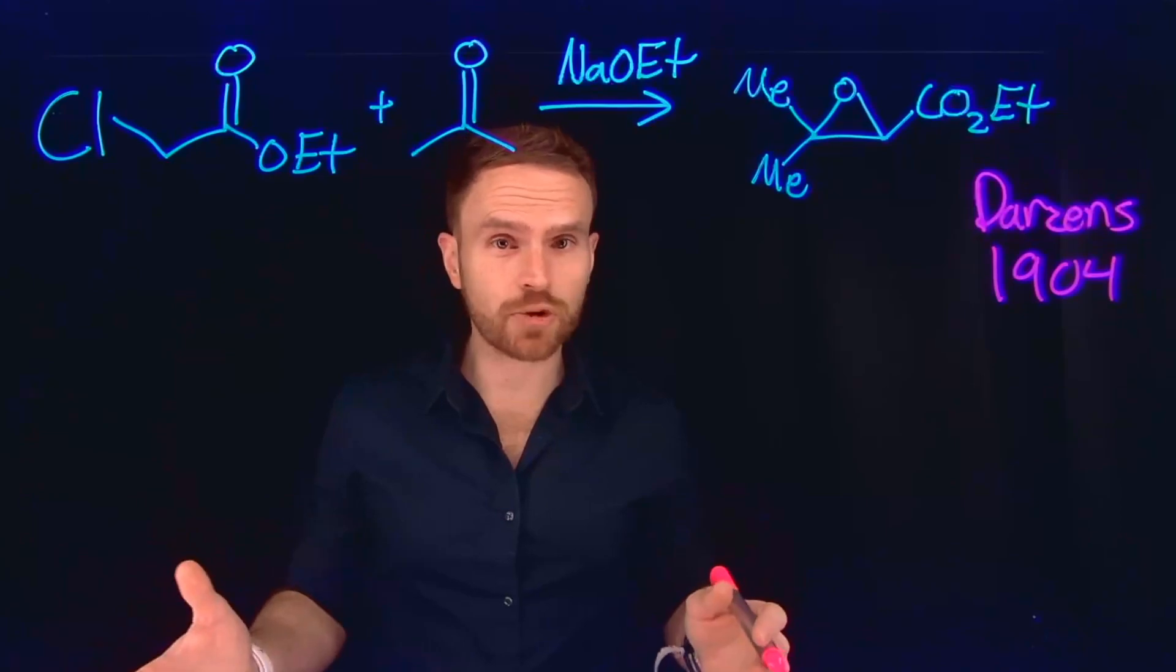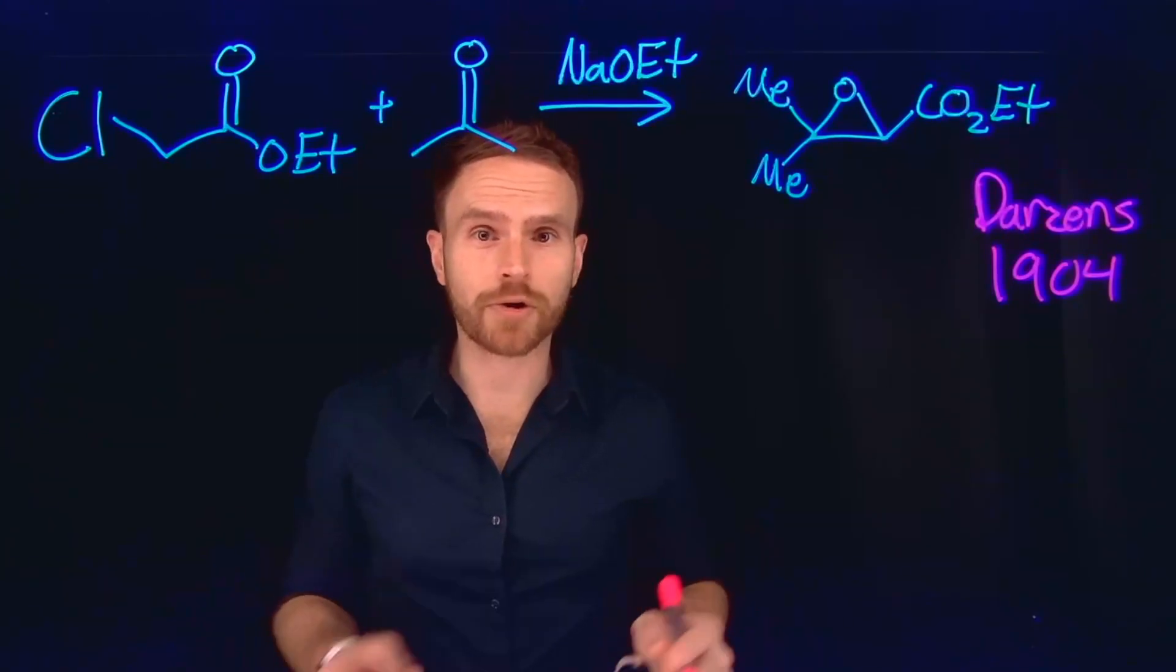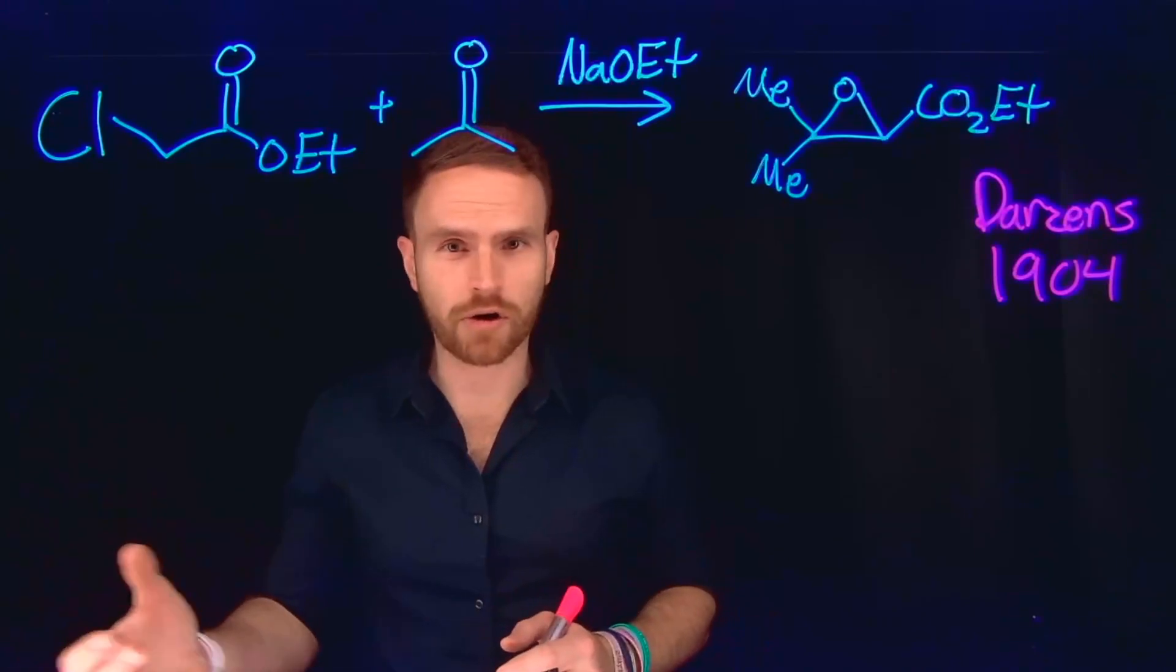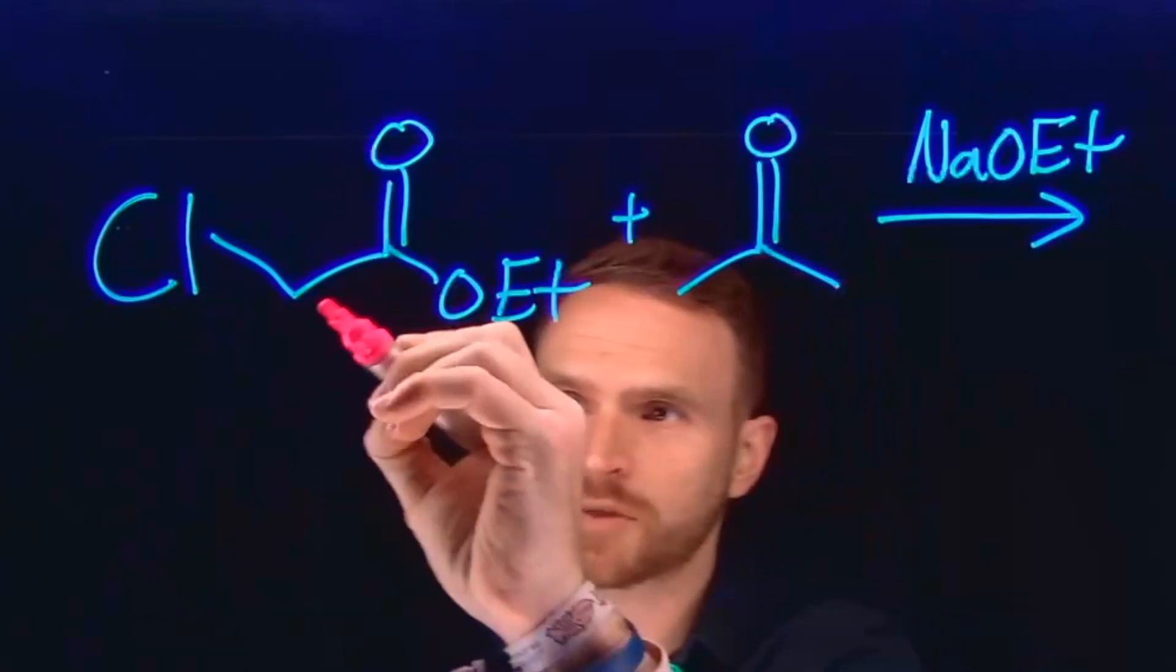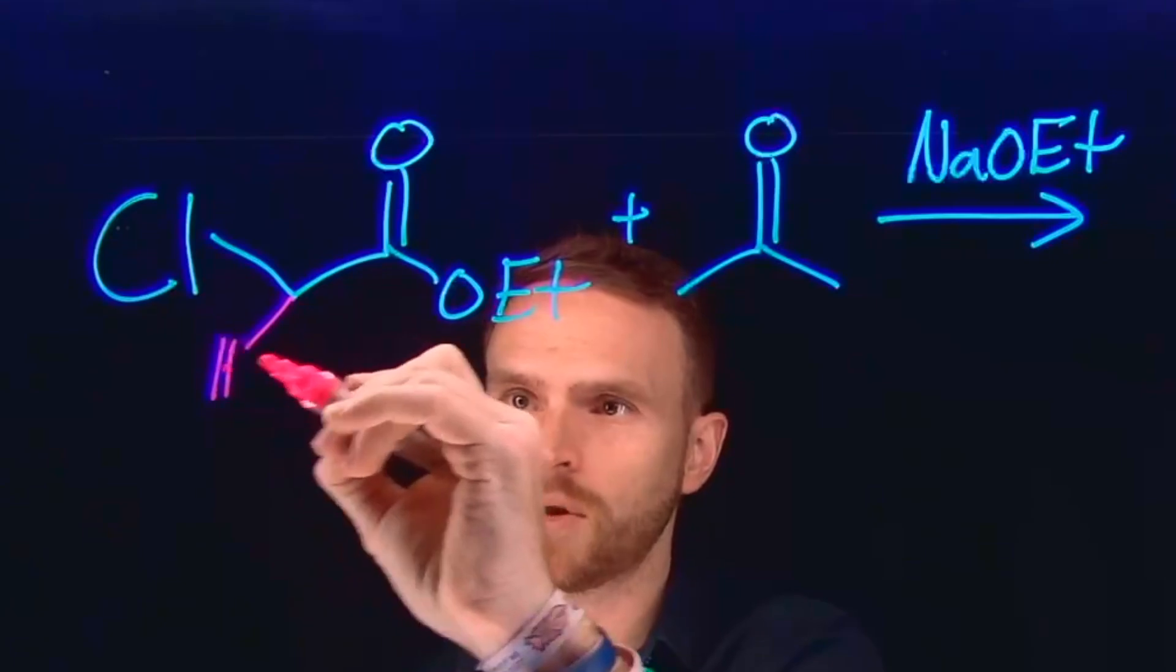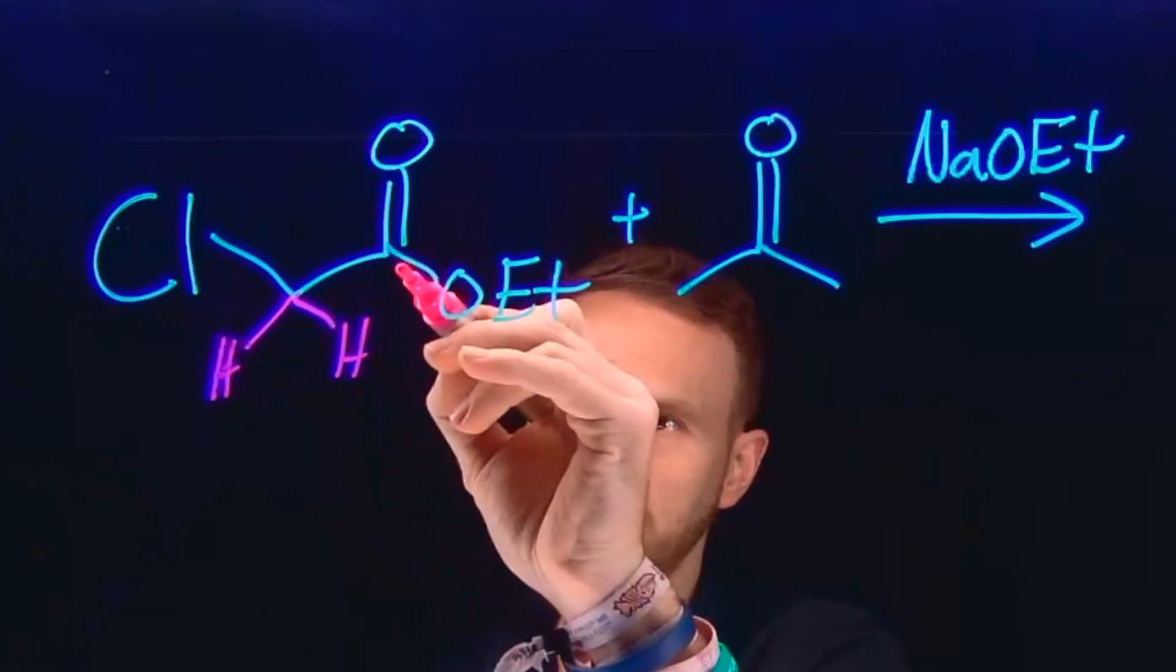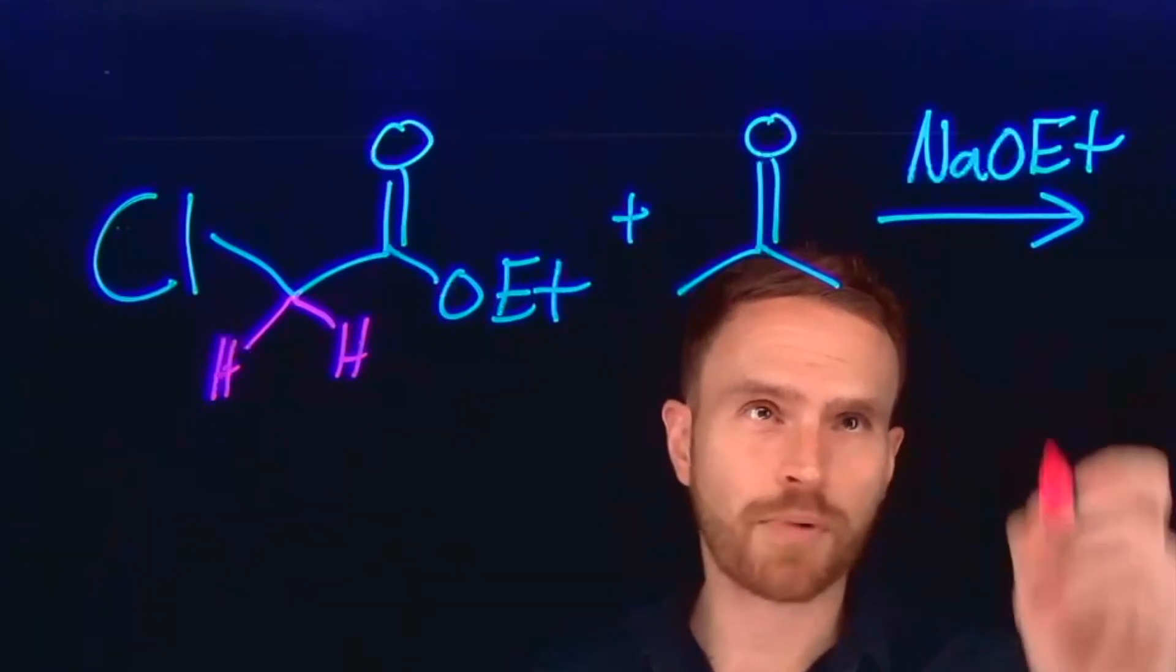This reaction follows a very similar pathway to ones you probably learned about in organic chemistry, like enol and enolate formation for aldol condensations or Claisen condensations. The first step in this reaction is to deprotonate one of the alpha-carbon hydrogens, alpha meaning the carbon adjacent to this carbonyl group, in the presence of this base.